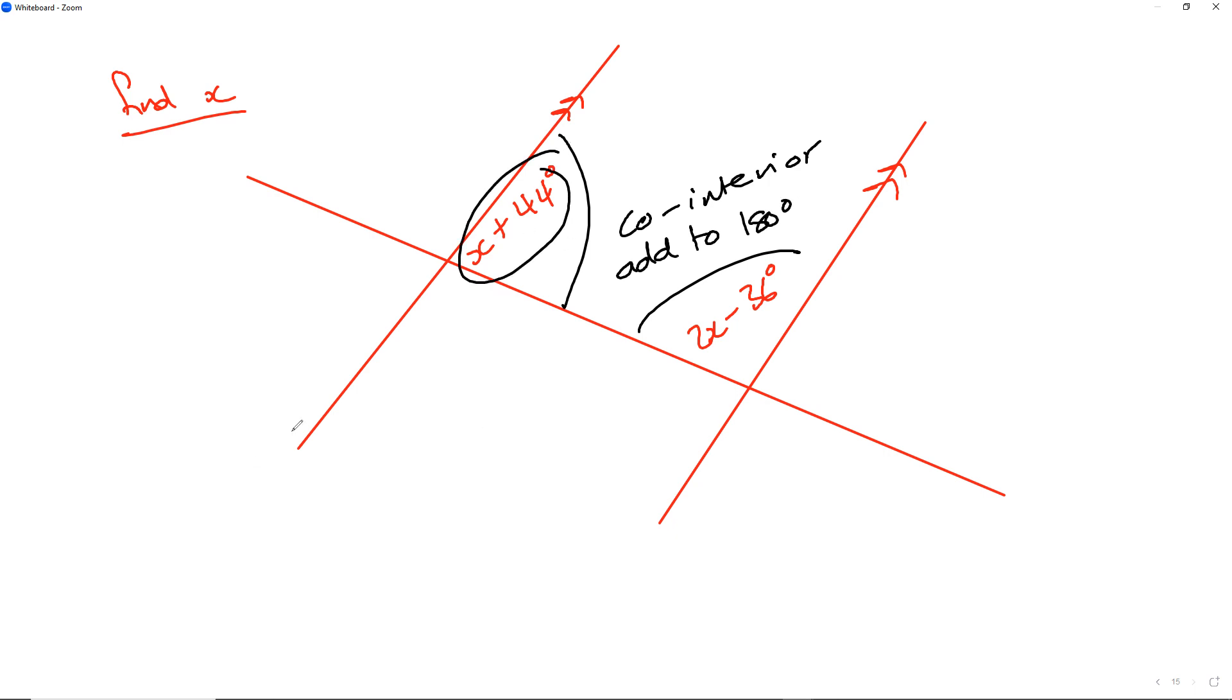Which means if I take this, which is x plus 44, and I add it to this, which is 2x minus 36, it becomes 180 degrees. And 44 minus 36 is 8, so 3x plus 8 equals 180.